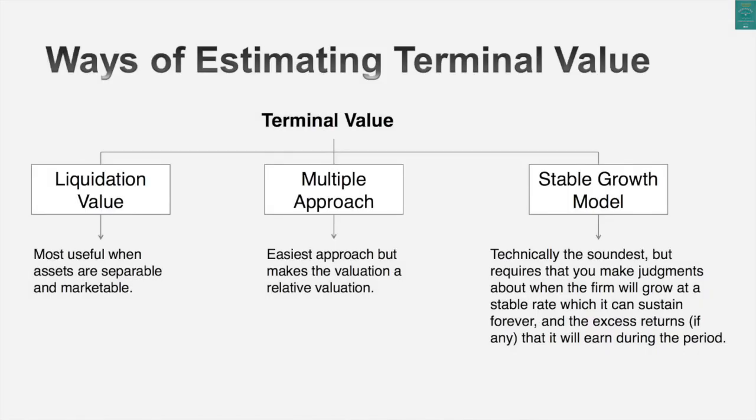There are three approaches used to estimate terminal value. In my view, one of these three approaches should never be used, but it's actually the predominant approach that ends up being used. The first one: at the end of year 5, 10, or 15, you can shut the business down and sell off its assets. That's called liquidation value. When I value private businesses, that is pretty much how I estimate terminal value almost all of the time, because when the owner ends a business, it gets sold off in pieces.